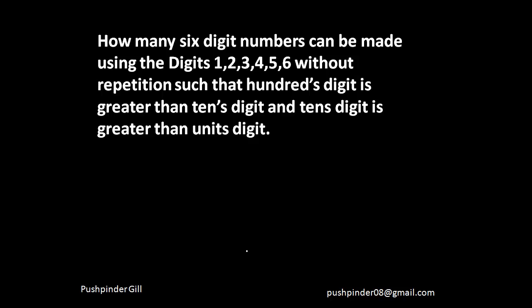Here's a tricky question: in how many 6-digit numbers can be formed using the digits 1, 2, 3, 4, 5, 6 without repetition such that the hundreds digit is greater than the tens digit and the tens digit is greater than the units digit? First, 6 digits can be arranged in 6 factorial ways. Now you just have to see how many things are identical here.